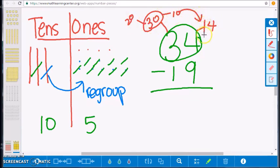After breaking apart 34, we will need to regroup to make the 4 now 14 and 30 becomes 20. You will subtract 14 minus 9 and 20 minus 10 and get the difference of 15.